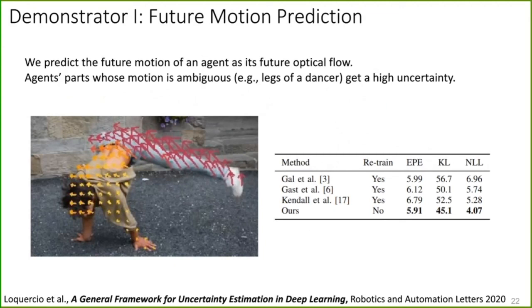We have demonstrated this framework on several demonstrators, on both computer vision and robotics tasks. The first was future motion prediction, which is by definition a very ambiguous task. We want to predict where agents will move in the future in terms of optical flow. We've seen that we obtain performance superior to existing methods and also kind of intuitive. For example, if we predict how a dancer would move, we would see very low uncertainty on the pivot points, like where the agent is rotating on his hands, but higher uncertainty on his legs, which are free and can move in any direction.